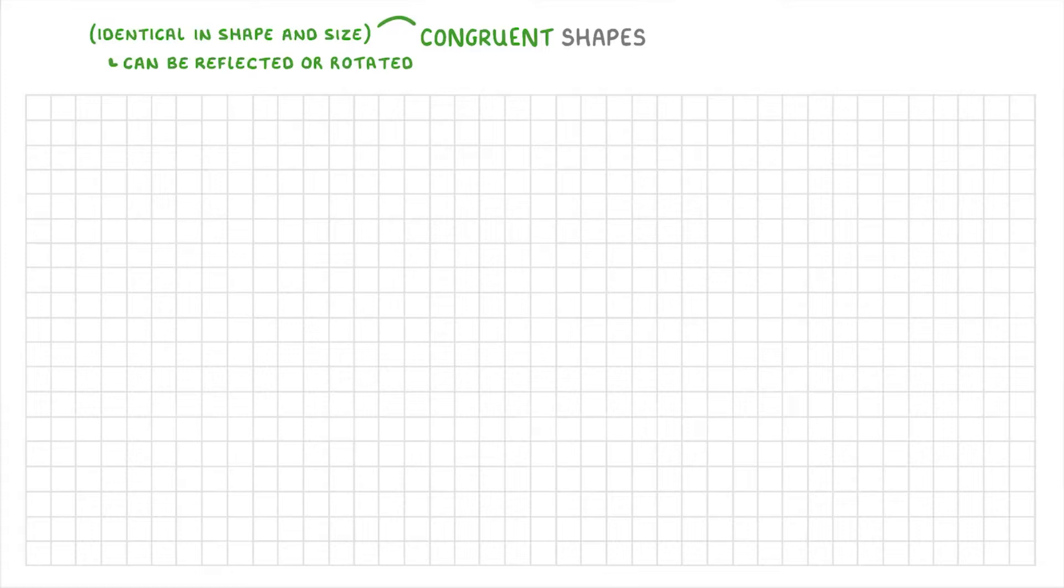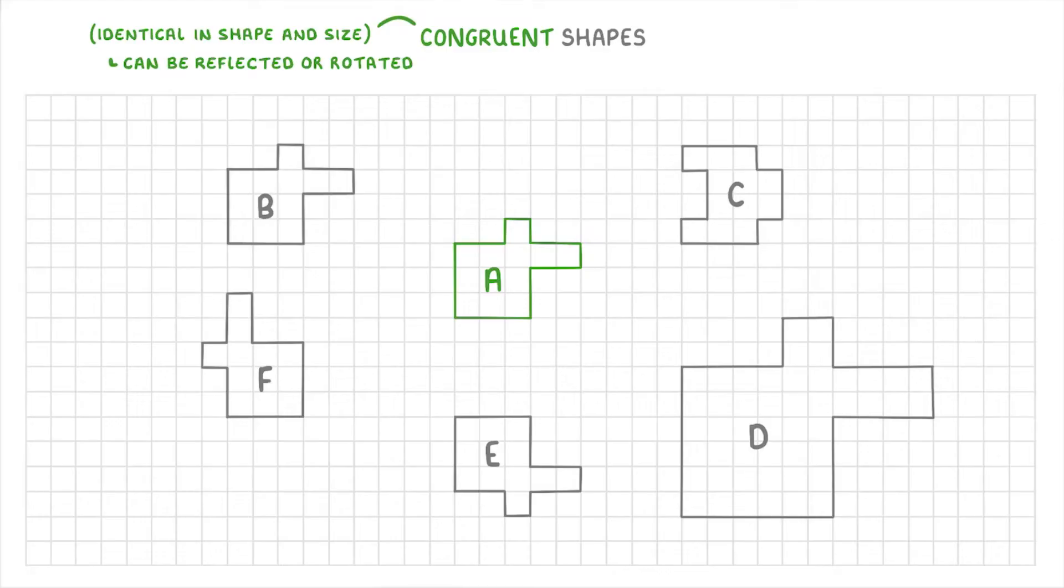To see this in practice, let's compare this main shape in the middle, which we'll label A, to these other five shapes, and see which of them are congruent. Feel free to give the video a pause and have a go for yourself.